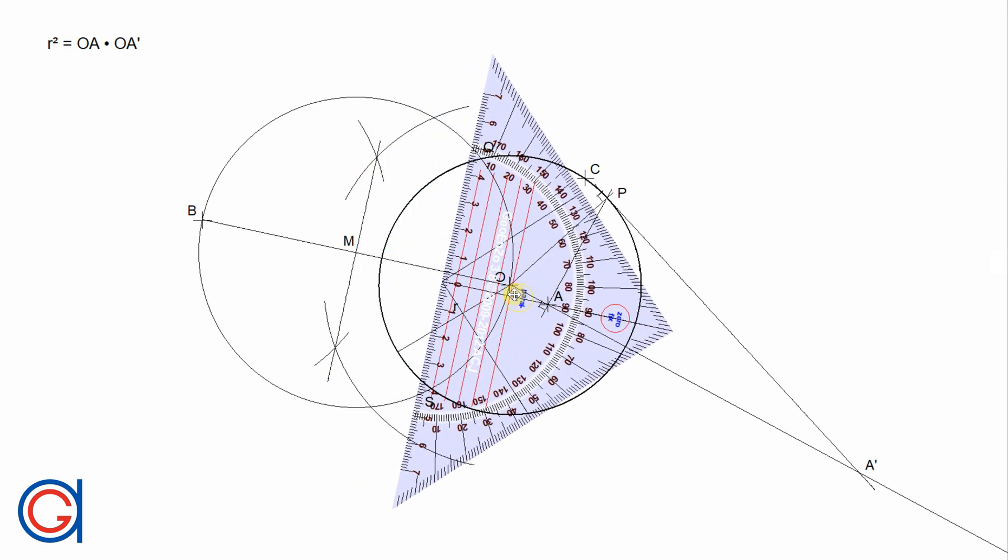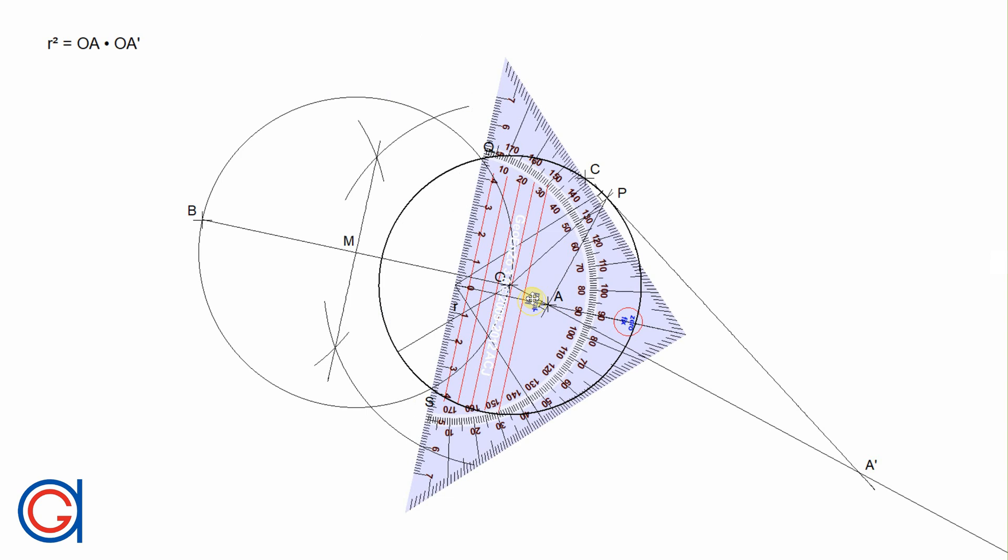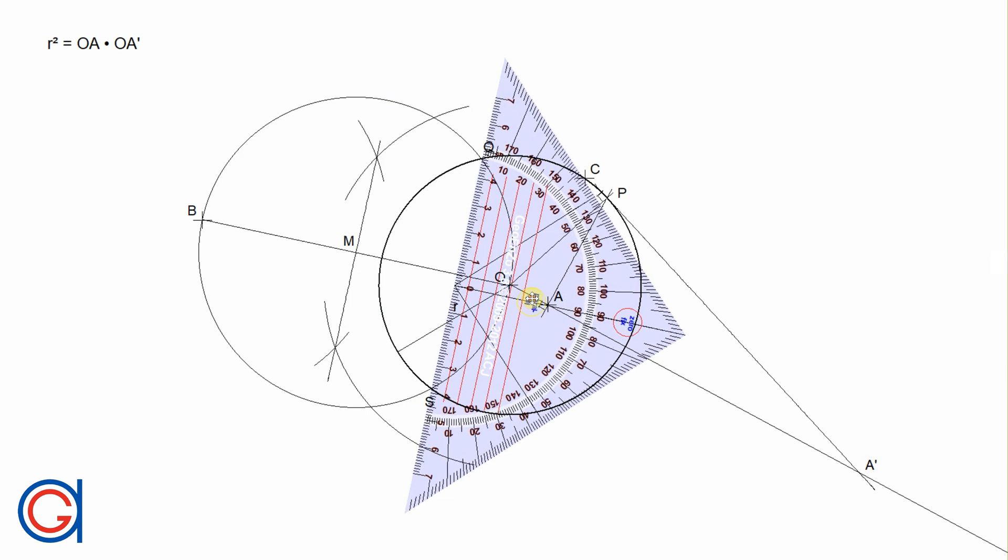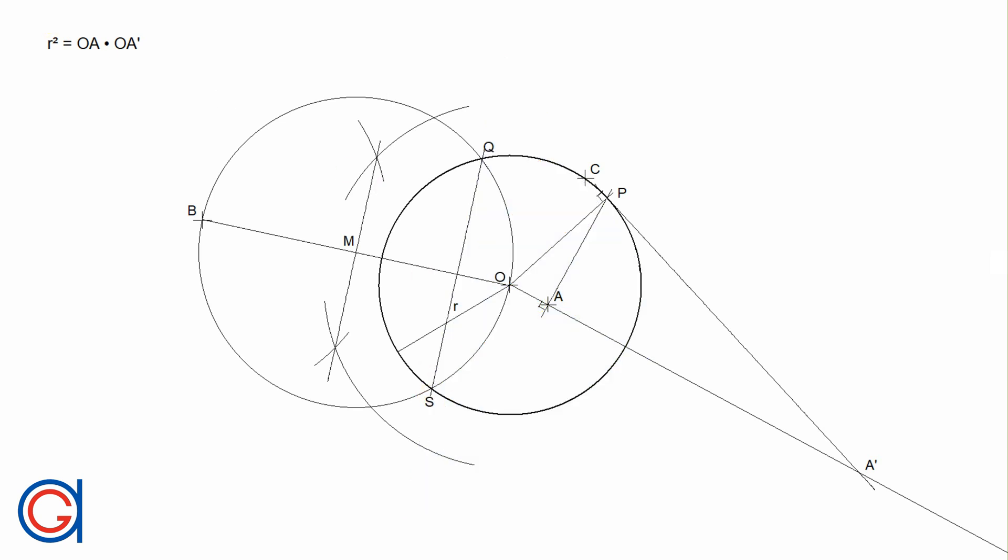The next step is to join points Q and S and where this line cuts the line BO, we obtain a new point B prime, which is the inverse point of the point B and satisfies the equation R squared is equal to OB times OB prime.